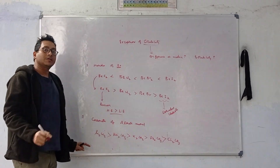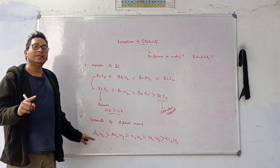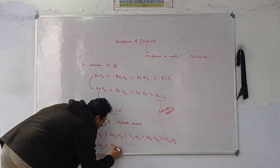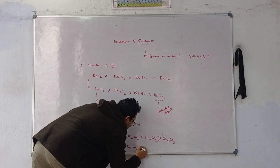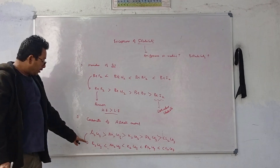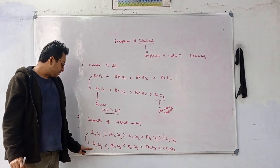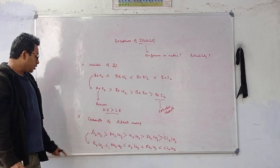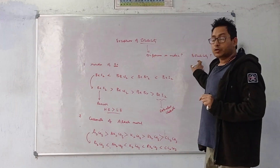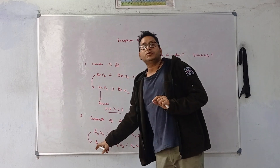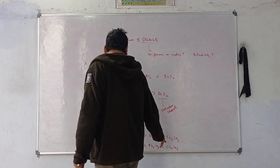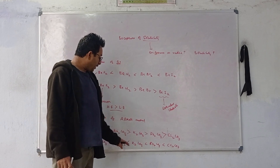But again, it was found experimentally that lithium carbonate has a higher hydration energy than its lattice energy. So the actual solubility order is: Li₂CO₃ < Na₂CO₃ < K₂CO₃ < Rb₂CO₃ < Cs₂CO₃ — which is the opposite of what the differential radii solubility concept would predict.